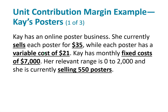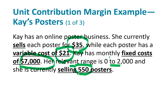Here's Kay's Posters. She's selling the poster for $35, her variable costs are $21, and she has fixed costs of $7,000. The relevant range is 0 to 2,000 posters. She's selling 550 posters, which is within the range, so everything is set to go.